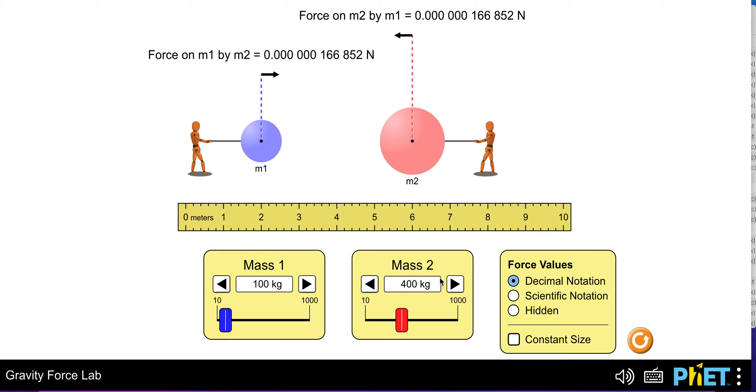of the object, which you can do in these boxes down below for Mass 1 and Mass 2. You can either slide the scale up and down to get the number, or you can click on the arrows. It doesn't really let you click and type, but that's how you change the mass.